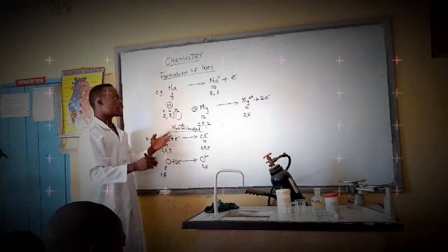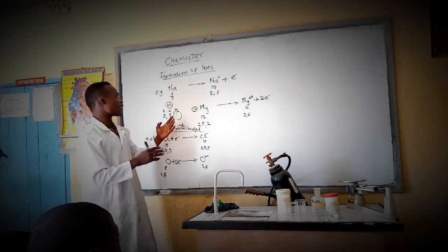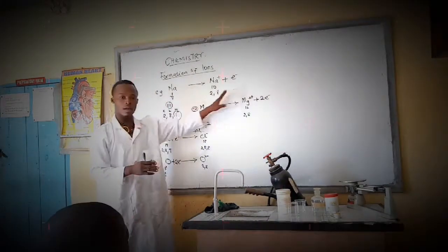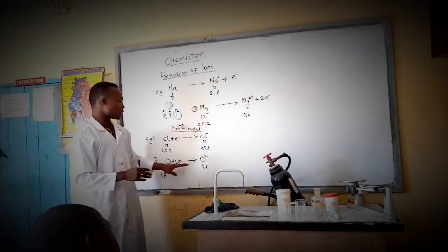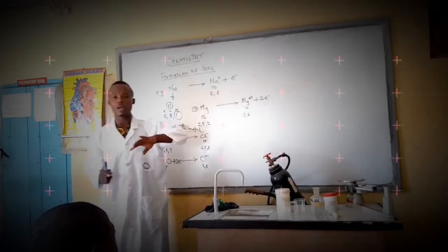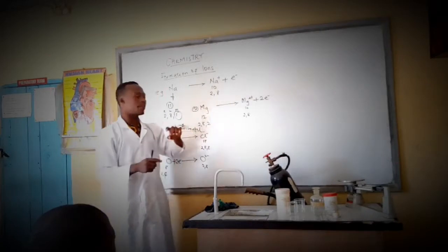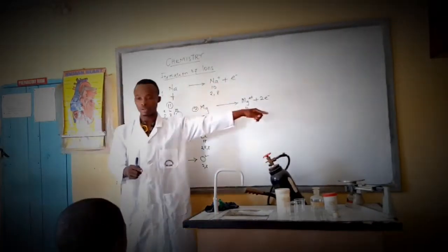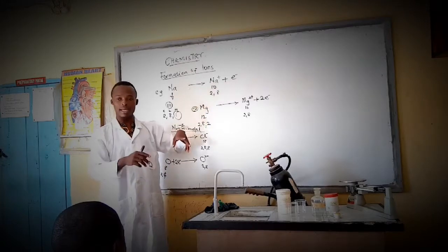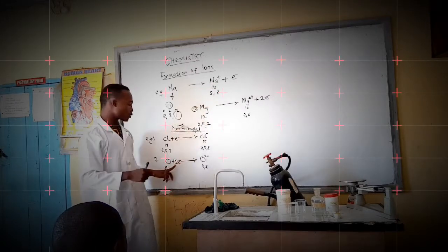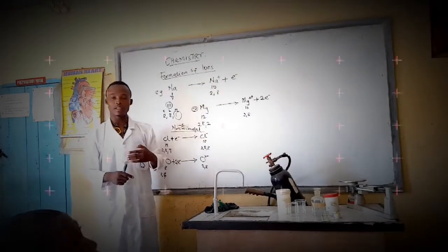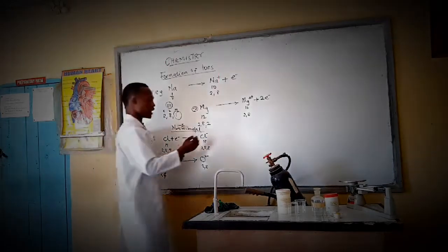So, ions can exist in metal states or non-metal states. In the metal state, elements lose electrons to form ions and achieve balance. In the non-metal state, elements gain electrons to form ions and achieve balance.